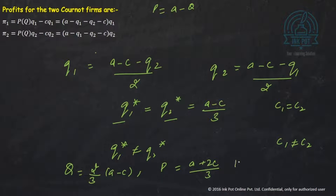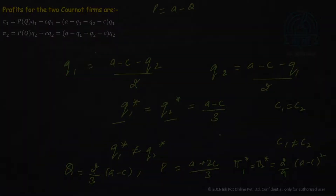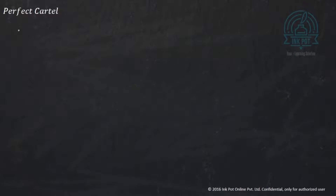Using these values, you can calculate the profits of the first and second firm. Pi1 star equals Pi2 star equals (A minus C) squared / 9. That brings us to the next concept: the perfect cartel. We're not done with Cournot — we'll compare the two — but we need to study cartel to understand the full picture.